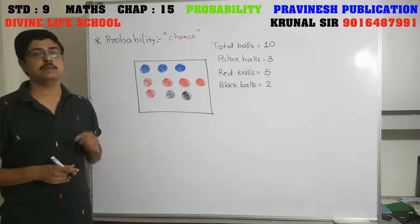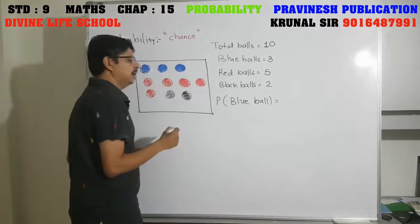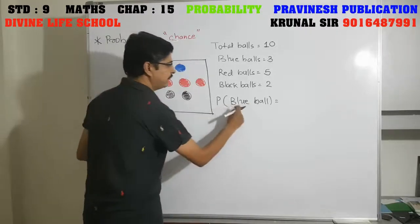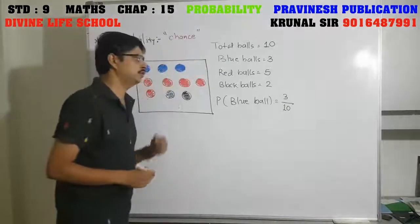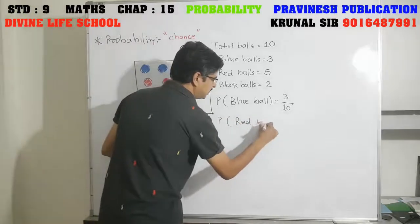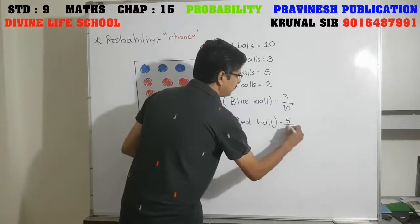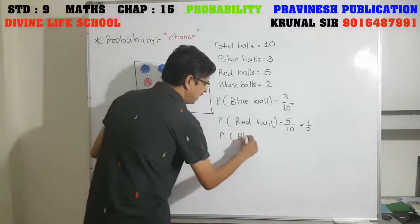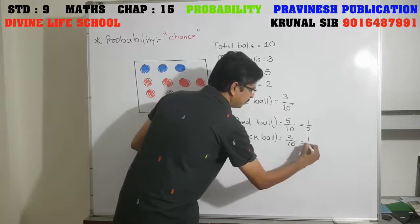What is the probability that the ball is blue in color? Probability of getting a blue ball — here P stands for probability and blue ball is our event. Number of blue balls is 3, total number of balls is 10, so probability of blue ball equals 3 upon 10. Next, probability of getting a red ball: we have 5 red balls, so probability equals 5 upon 10, which simplifies to 1 upon 2. Probability of black ball: we have 2 black balls, so that is 2 upon 10, simplified to 1 upon 5.